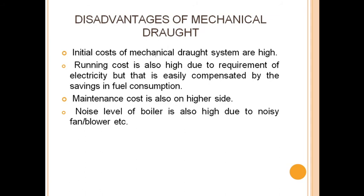Some disadvantages: the initial cost of a mechanical draught system is high. The running cost is also high due to the requirement of electricity, but this is easily compensated by savings in fuel consumption. Maintenance cost is also very high, and the noise level of the boiler is also high due to the noisy fan or blower.